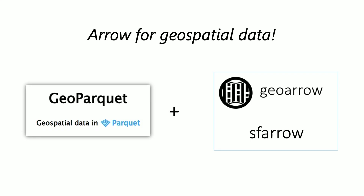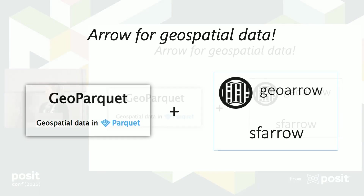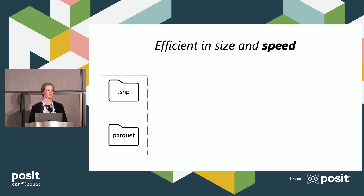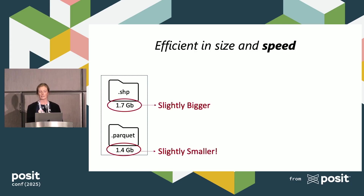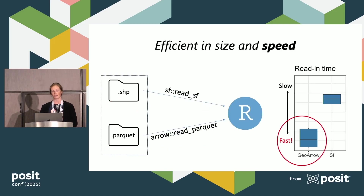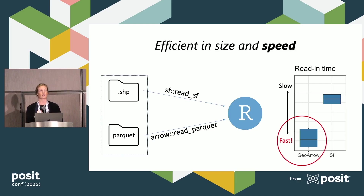The geospatial Arrow suite consists of the GeoParquet file format, and we use two R packages — GeoArrow and SF Arrow — to help us out. I'll show you some benchmarks for that 2020 fire data. We saw some savings in memory: the GeoParquet file is a little bit smaller than a shapefile. But what was really impressive to me and my team is the read-in speed, which is less than half that for Arrow compared to SF. And this is just the beginning of the time efficiency offered by Arrow.